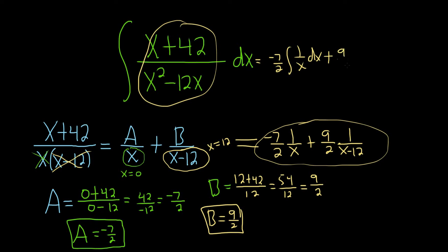plus 9 halves integral 1 over x minus 12 dx. The first one is really easy. It just becomes a natural log of absolute value of x. That's the formula.